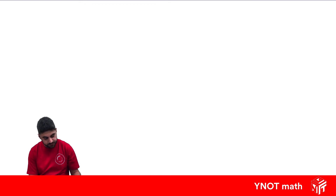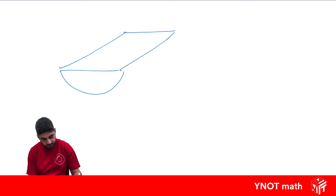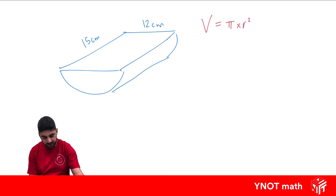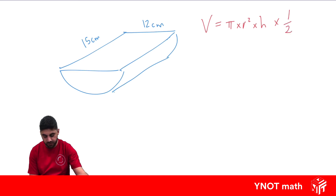One more example. What we have here is a half cylinder. To find its volume, it's going to be pi times the radius squared times the height — just like a normal cylinder — but we multiply it all by a half, because we've only got half of it.